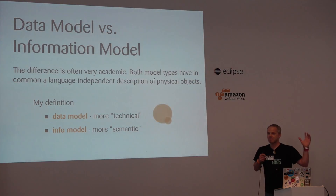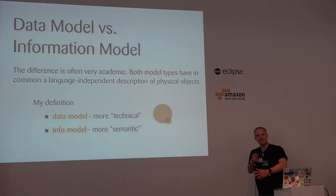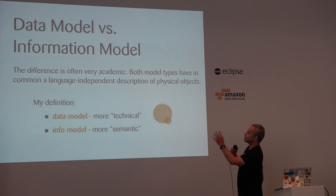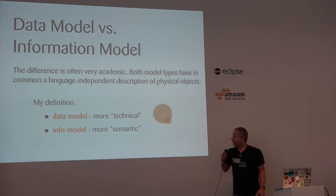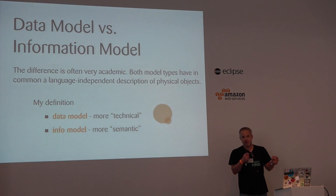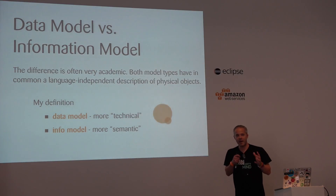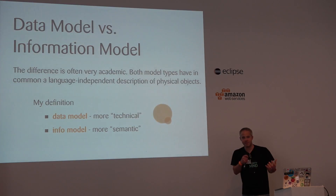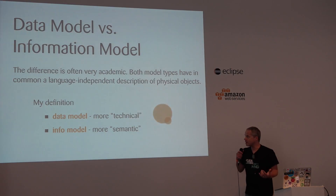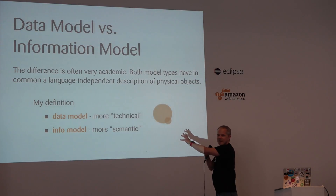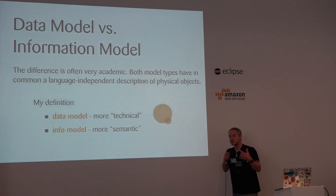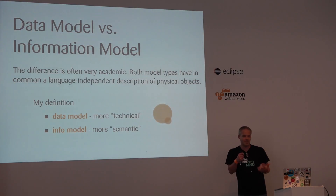For most people it's irrelevant that there is a difference between data models and information models. You can subset them a little bit. What's important for us is that you can use these models as a sort of language-agnostic way to describe concepts in information technology. My personal definition is that typically data models are slightly more technical and are more easily understood, whereas information models are more semantic.